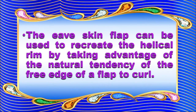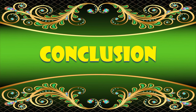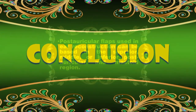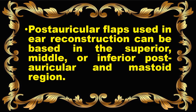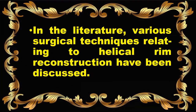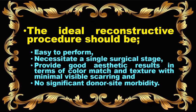The EVE skin flap can be used to recreate the helical rim by taking advantage of the natural tendency of the free edge of a flap to curl. Post-auricular flaps used in ear reconstruction can be based in the superior, middle, or inferior post-auricular and mastoid regions. Various surgical techniques relating to helical rim reconstruction have been discussed in the literature. The ideal reconstructive procedure should be easy to perform, necessitate a single surgical stage, provide good aesthetic results in terms of color match and texture, with minimal visible scarring and no significant donor site morbidity.